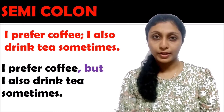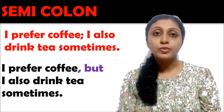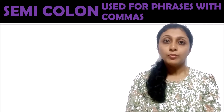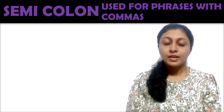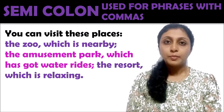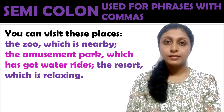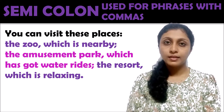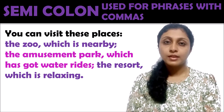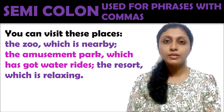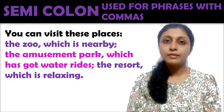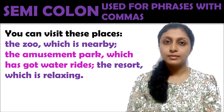You also use semicolons for phrases that have commas within them. For example: 'You can visit these places: the zoo, which is nearby; the amusement park, which is called Water Rides; the resort, which is relaxing.' All these phrases are separated by semicolons and have commas within them.